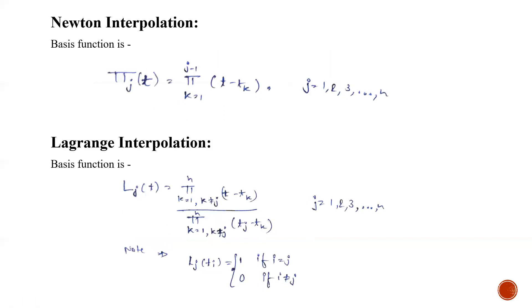The next is Newton interpolation for which the basis function is product of (t - tk) where k goes from 1 to j minus 1.